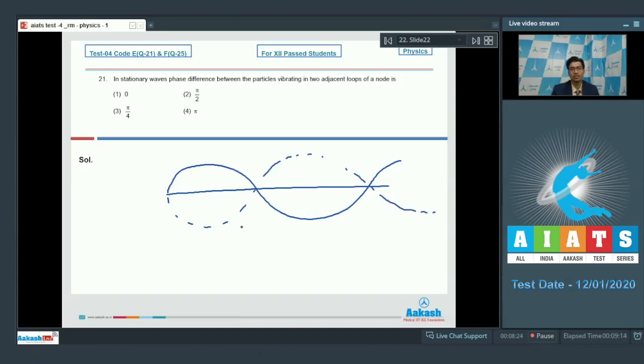If this is the stationary wave, this is the node, then we can see that the particles on the opposite sides of the node, i.e. in the adjacent vibrating loops, are in opposite phase. If one particle is upward, the other particle will be downwards.